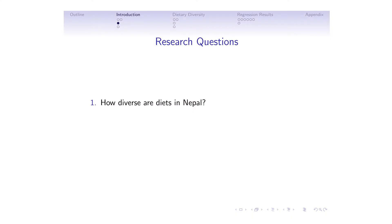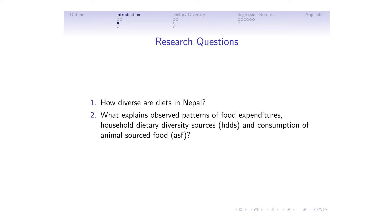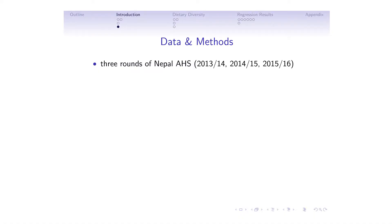I'm going to try to answer two questions: first, how diverse are diets in Nepal? And what explains observed patterns of both food expenditures and household dietary diversity, and consumption of animal-sourced foods? The data come from the annual household survey — a very rich data set. We're using three rounds of the data, representing 11,809 households, roughly split between urban and rural, and all information is population-weighted.